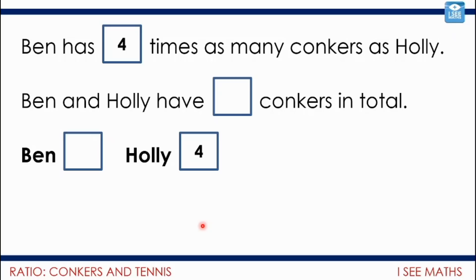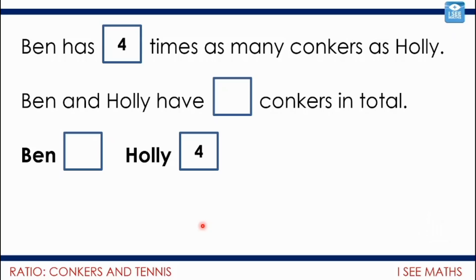How about this one: Ben has four times as many conkers as Holly, and Holly has 4 conkers. How many will Ben have? Pause the video and have a go. For this one the ratio is 4 to 1, and Holly has 4, so Ben will have 4 times as many — 4 lots of 4 — so Ben will have 16, and there'll be 20 conkers in total.